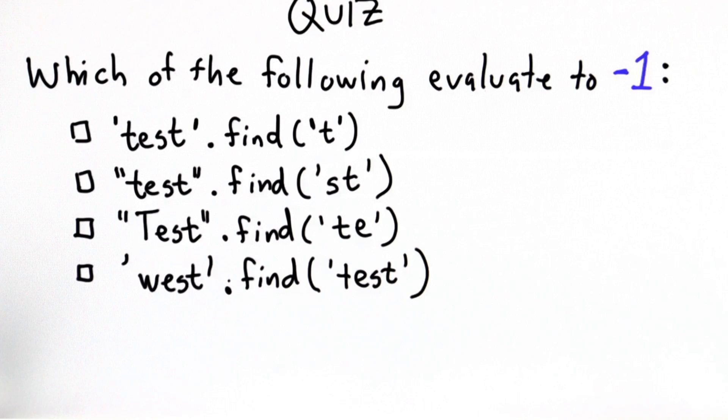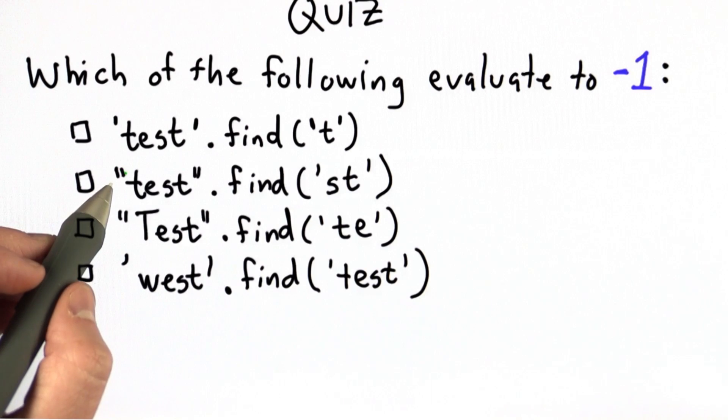The answer is that find will return negative 1 when the target string is not found in the search string. Of the four examples here, there are two where that's the case. For both of these, it is found.